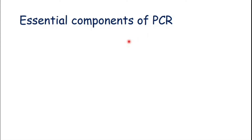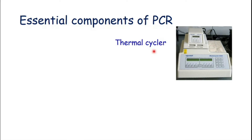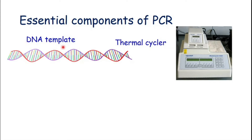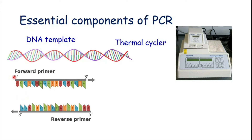In this slide we will discuss essential components of PCR. The main component is the thermal cycler, also known as the PCR machine. We also need some ingredients to make a PCR reaction mixture: a DNA template which we want to amplify, forward and reverse primers which attach to their complementary sequence on both strands of DNA, and dNTPs, which are the building blocks of DNA.